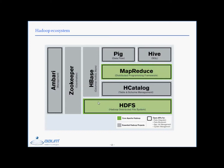HDFS is the storage part of Hadoop. It consists of a name node that keeps information about data location. Data is stored in various data nodes spread across multiple systems. MapReduce is the processing part of Hadoop. It consists of a job tracker which is responsible for assigning tasks to each individual task tracker.